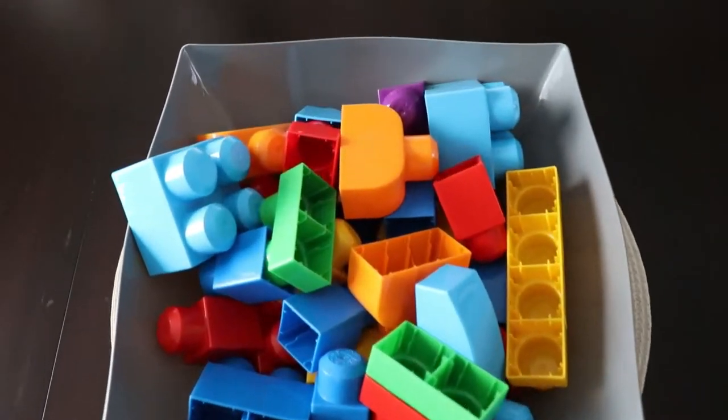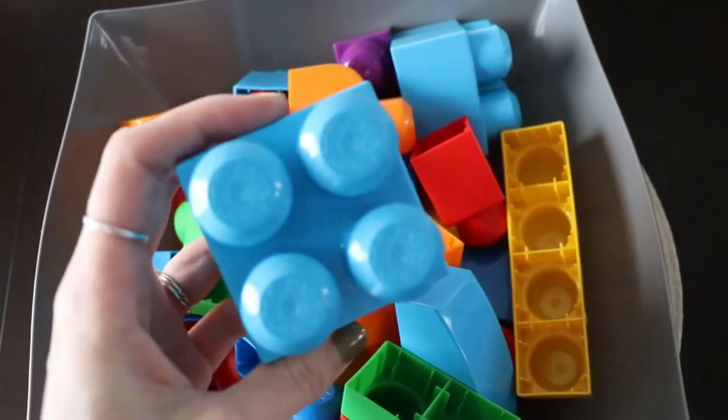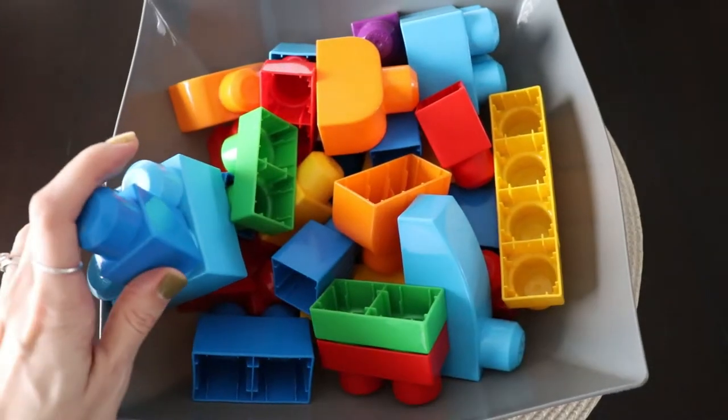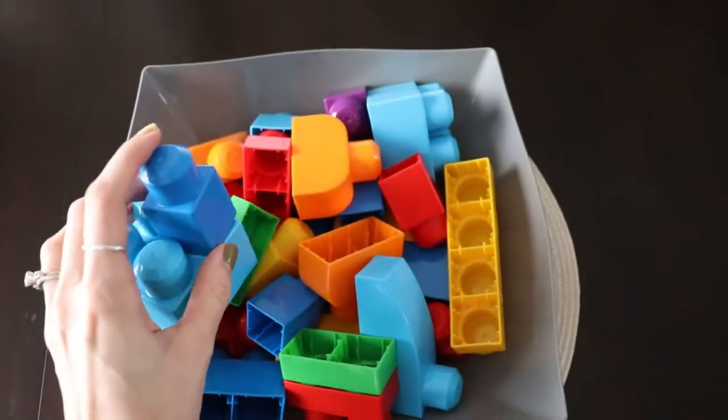Next are Duplos. And so these are just large Legos that are child safe, of course, not any little tiny pieces. He loves these. These are introduced a little bit later, maybe at eight months, and he can kind of do some basic building at this point.